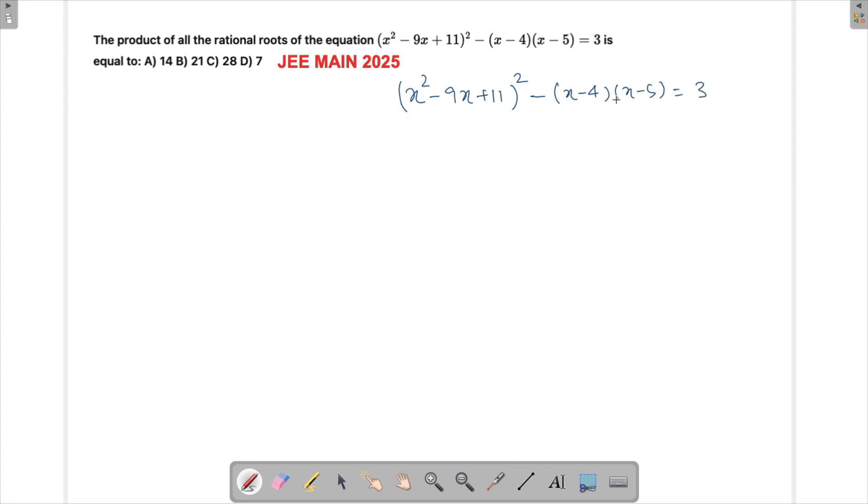Now if you try multiplying this, because anyways you have to solve it, what you will find is this will turn out to be x² and then -4x and -5x will be -9x, and then -4 into -5 will be +20. You can bring in -3 from this side as well which is equal to 0, and this is also (x² - 9x + 11)² equals to 0.